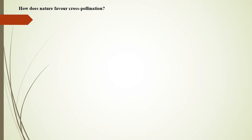Let's see how nature favors cross-pollination. Nature favors cross-pollination through a variety of adaptations. In other words, these are the mechanisms to prevent self-pollination.